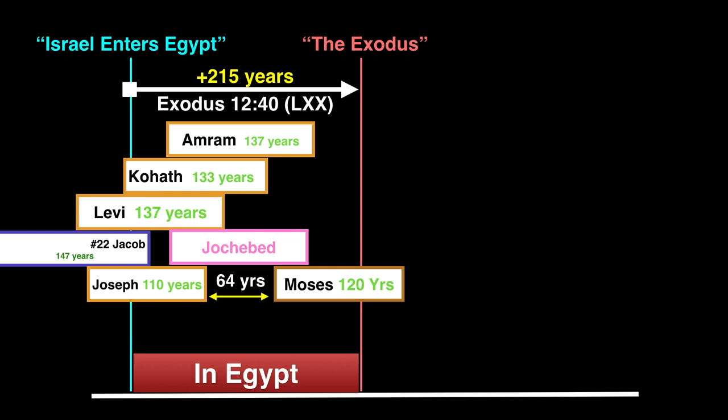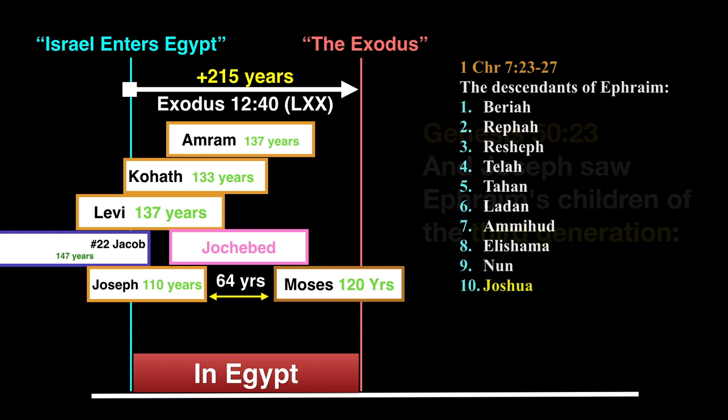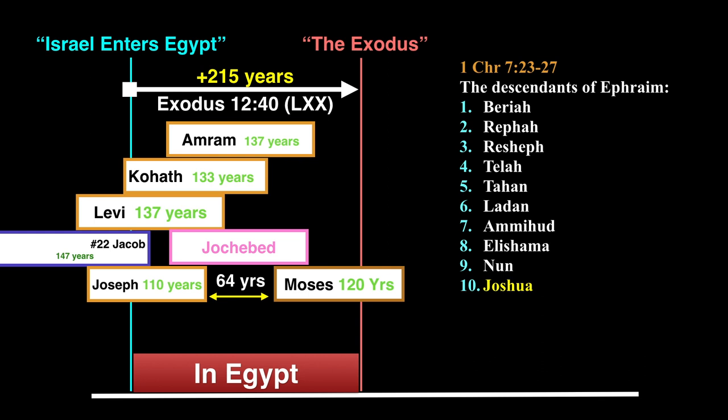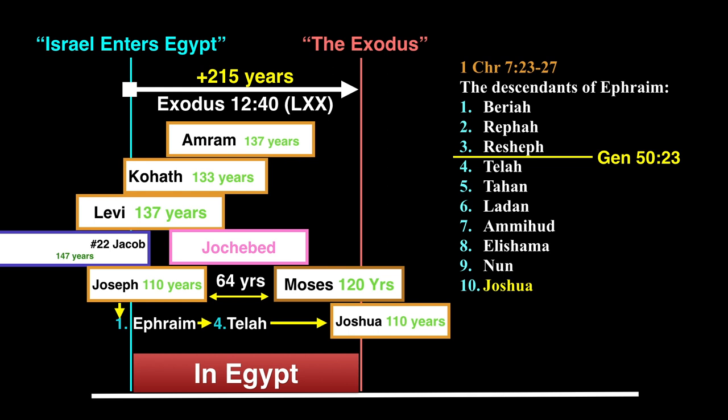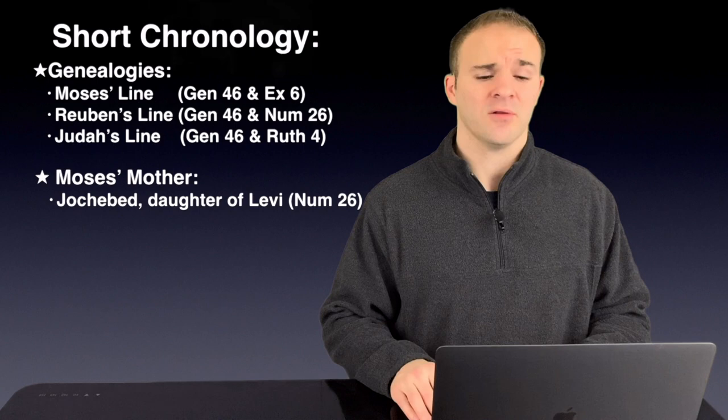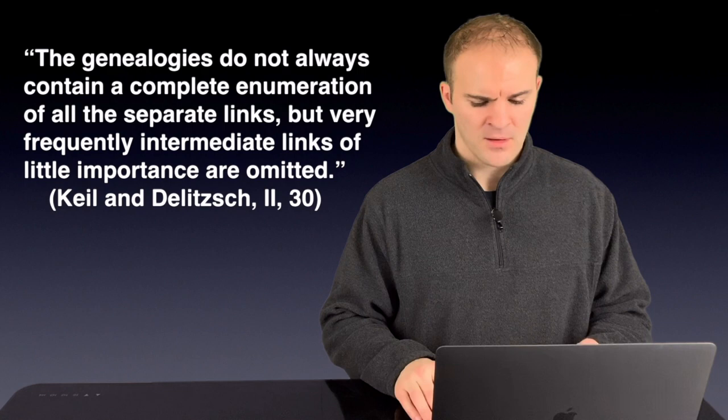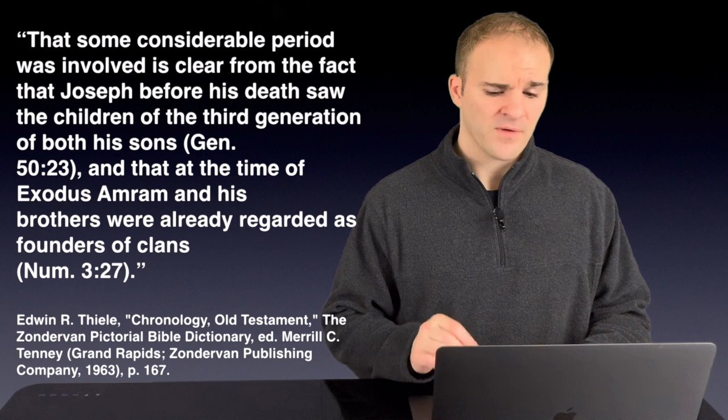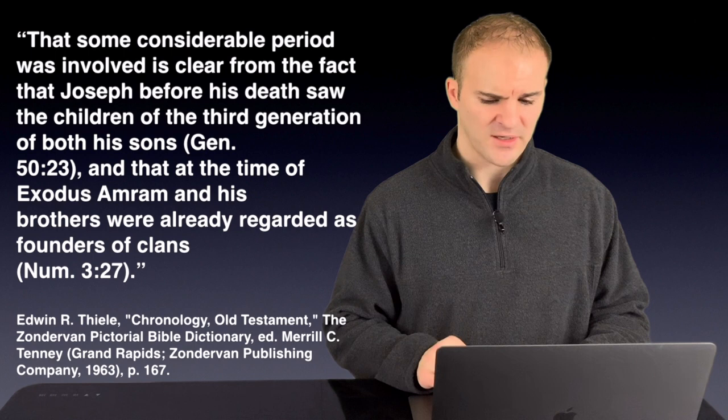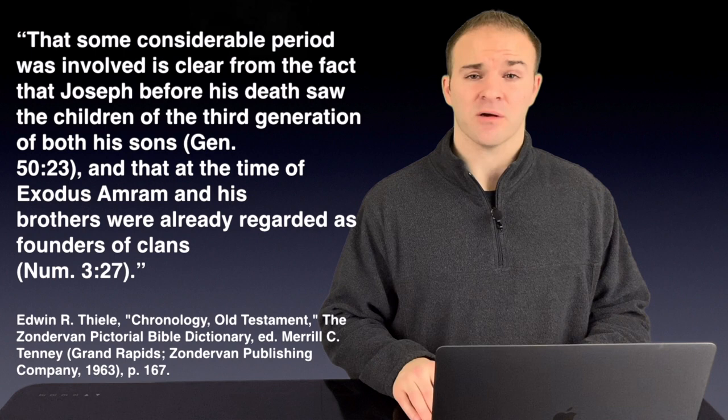The next difficulty for the shorter period are the generations from Ephraim to Joshua. Genesis 50 verse 23 reads, And Joseph saw Ephraim's children of the third generation. And 1 Chronicles 7 records that there were ten generations between Ephraim and Joshua. So, with Joseph's cutoff line inserted in, we would have six generations to be born in a hundred-year window. Ultimately, the tug-of-war match here resides over how strict you are with the genealogies. Keele observed that the genealogies do not always contain a complete enumeration of all the separate links, but very frequently, intermediate links of little importance are omitted. And Edwin Thiel says that some considerable period was involved is clear from the fact that Joseph before his death saw the children of the third generation of both his sons. And that at the time of Exodus, Amram and his brothers were already regarded as founders of clans. So, main chronology scholars tend to lean towards the longer period.